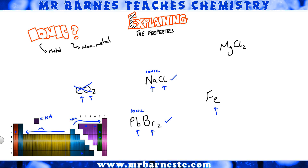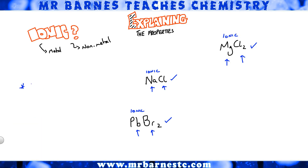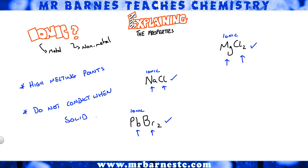Fe — straight away I've got a metal, but there's nothing else, there's no nonmetals, so Fe is not ionic. And the last one, MgCl2 — magnesium is group 2, a metal; chlorine is group 7, a nonmetal — so it's ionic. Now that you can work out whether it's ionic or not, remember the basic properties: all ionic compounds have a high melting point. They all do not conduct electricity when solid, but they do conduct electricity when molten.